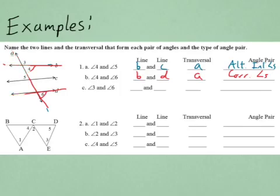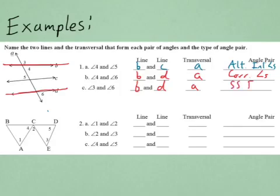For angles three and six: angle three is on line B, angle six is on line D, still on transversal A. They're both on the same side of the transversal and both exterior, so these are same side exterior angles.